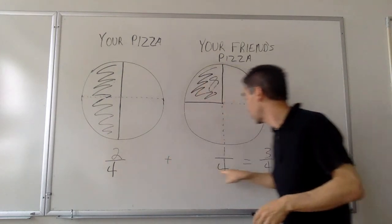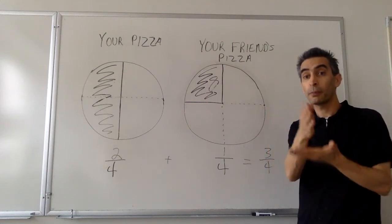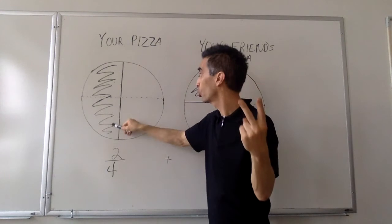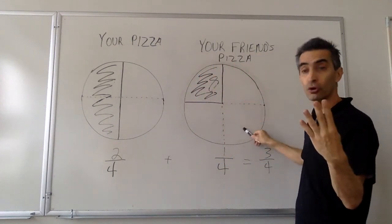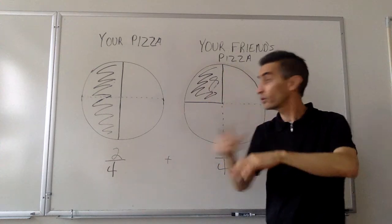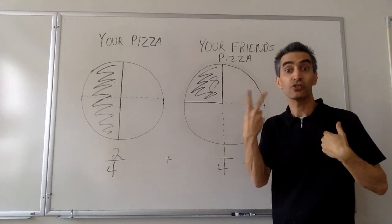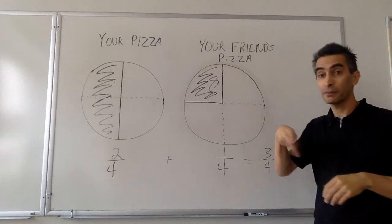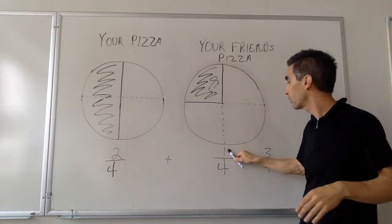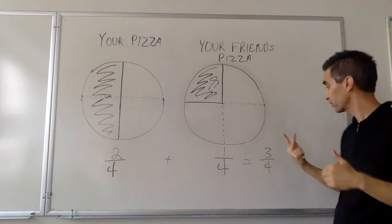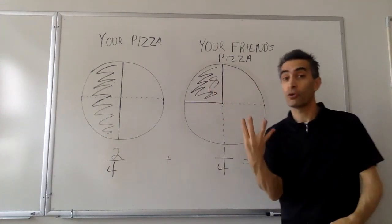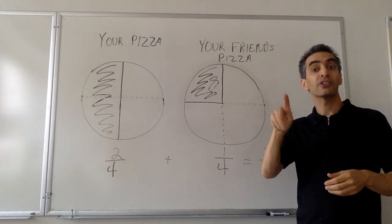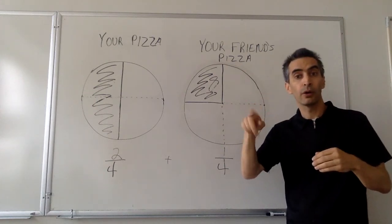Let's review quickly. That four on the bottom — the denominator — means you have four parts that are all the same size to equal one whole pizza: one, two, three, four on your pizza and one, two, three, four on your friend's pizza. The two on the top, the numerator, represents the number of parts you actually have: two in your pizza and one in your friend's pizza. You just add what's on top — two plus one equals three. The fours on the bottom don't change; they stay the same, because that represents the number of parts needed to equal one whole pizza.